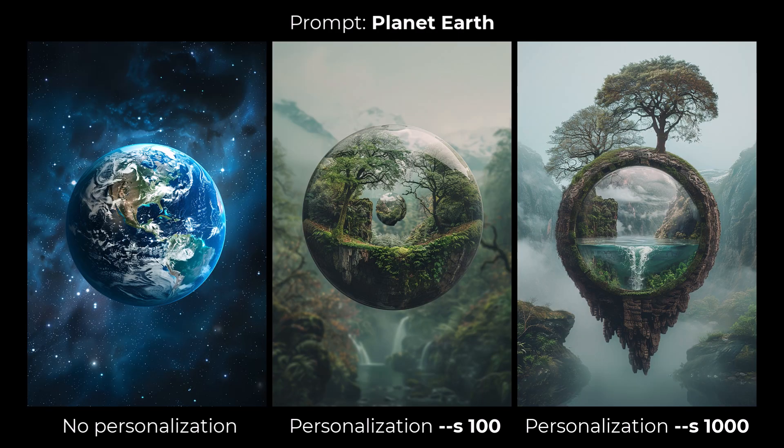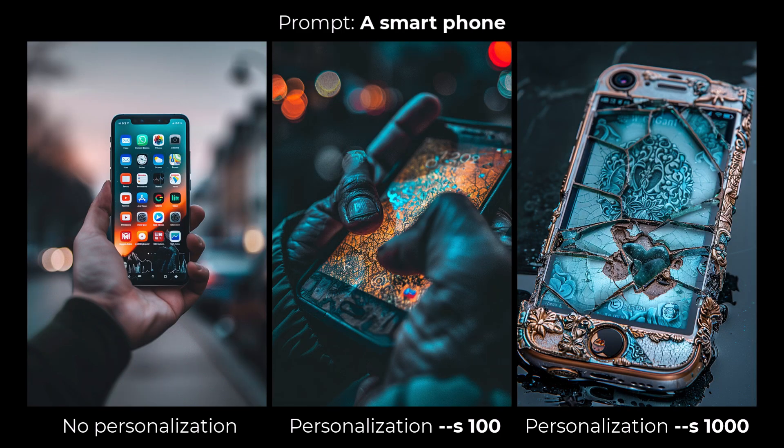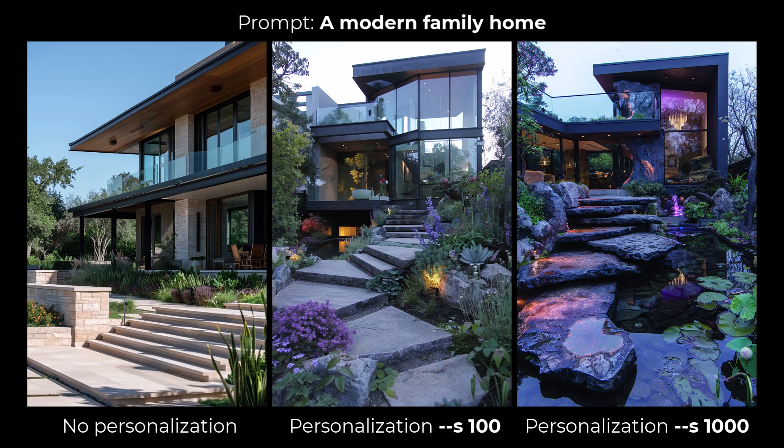For Planet Earth, I get a standard image without personalization, but moving up to 100 it leans more towards nature scenes, and cranking to stylize 1000 gives trees and a globe inside a kind of floating mountain — nature definitely seems to be a theme with my personalization style. For a smartphone, we go from a simple picture of someone holding a phone to something more dramatic and smashed up in the middle, and on the far right a very fancy smashed-up phone with completely different imagery — possibly mirroring my internal feelings about being constantly connected. Finally, a modern family home goes from something traditional to a more unique but still modern look, to a completely unique image that applies a very distinct style.